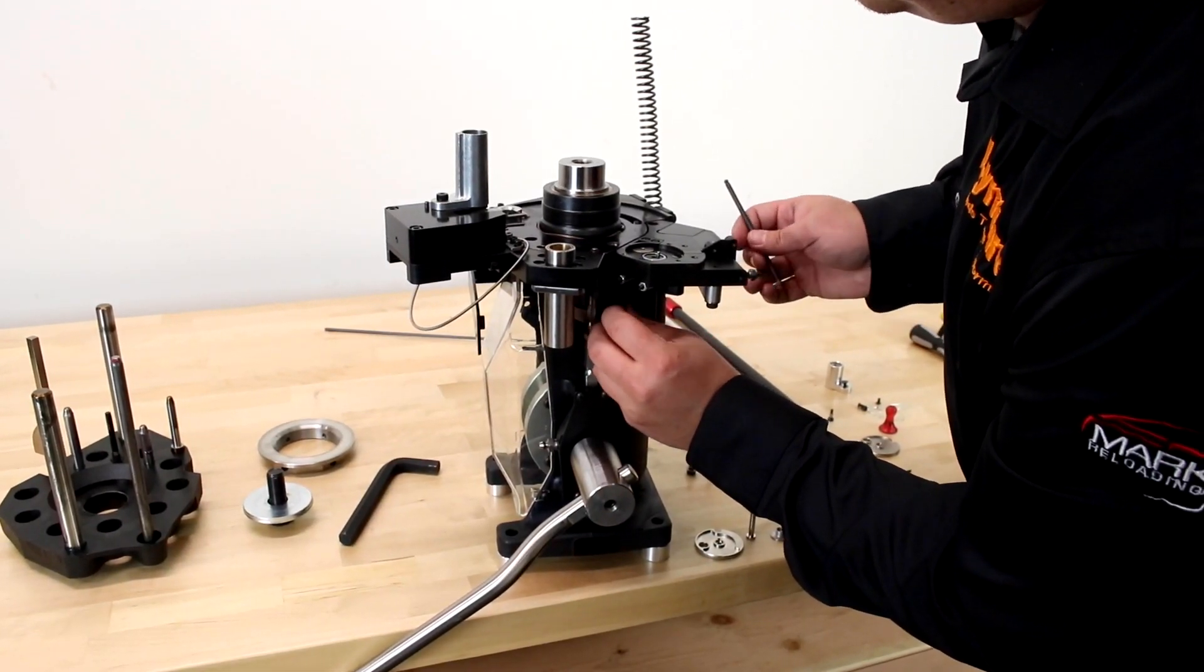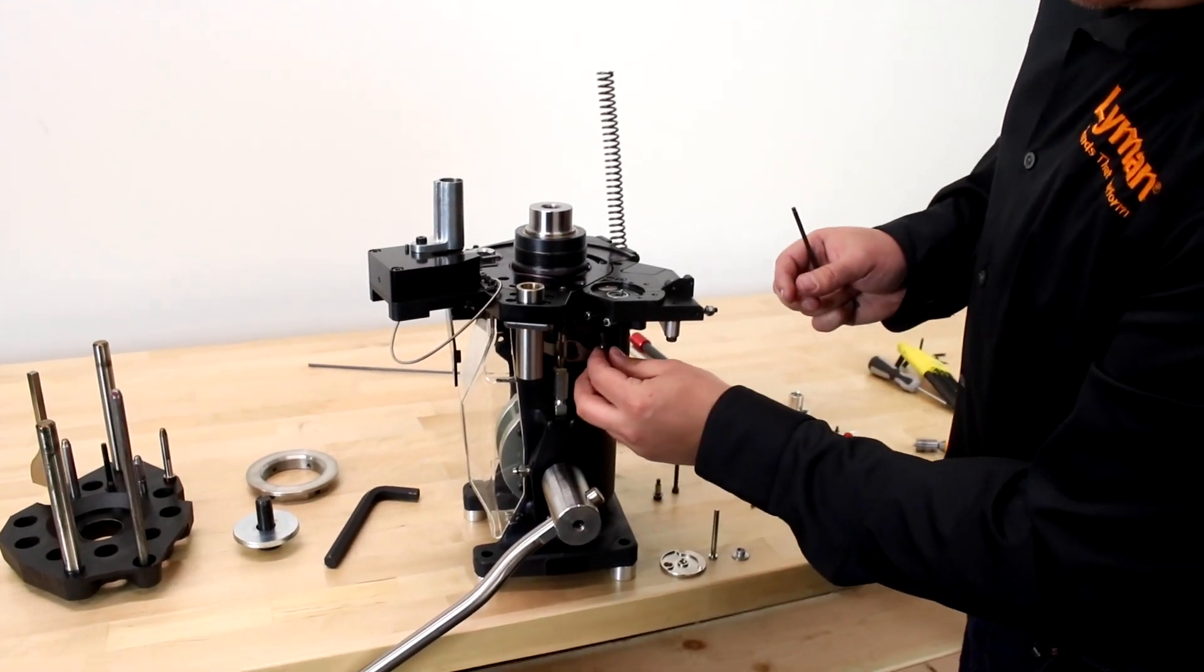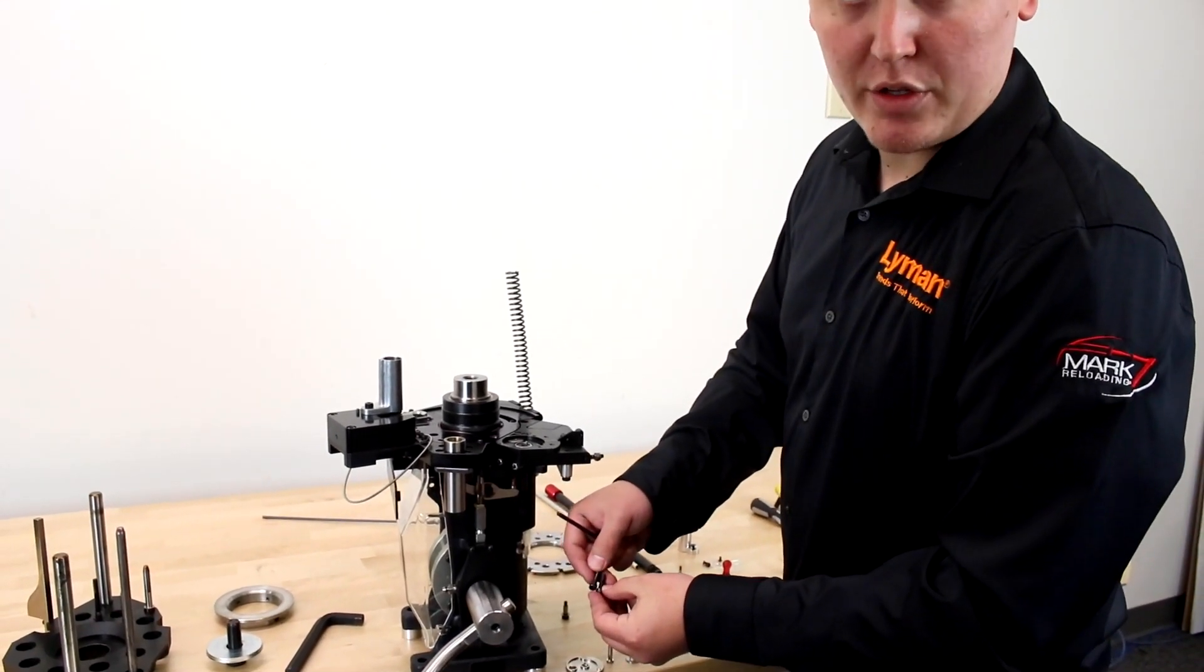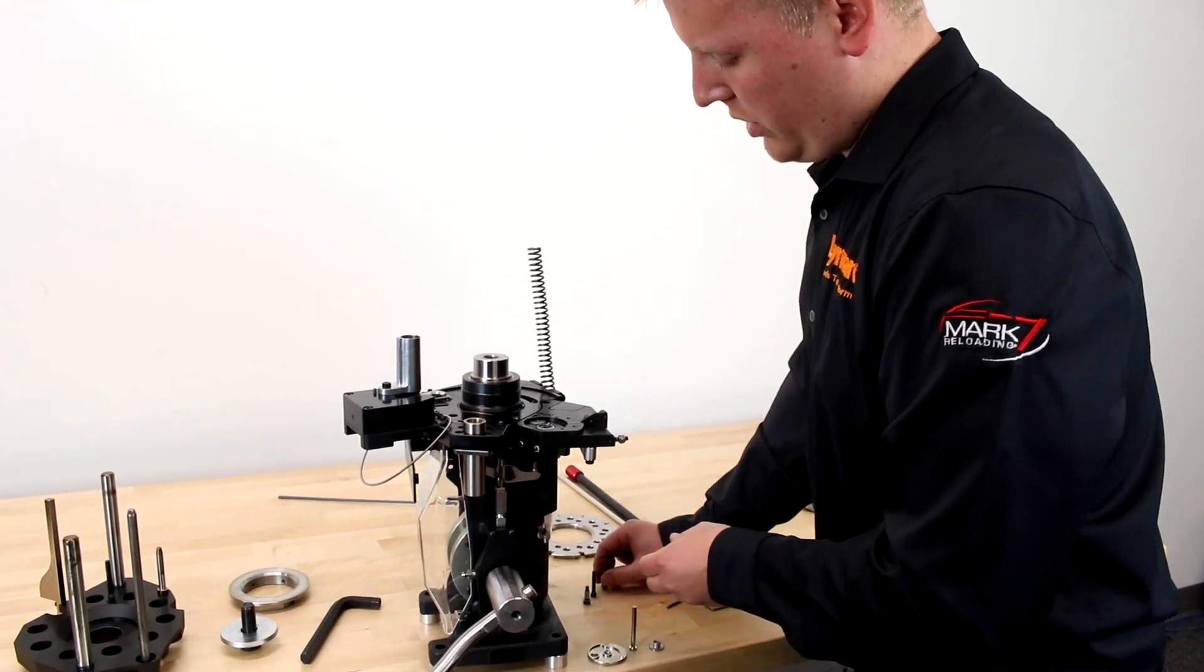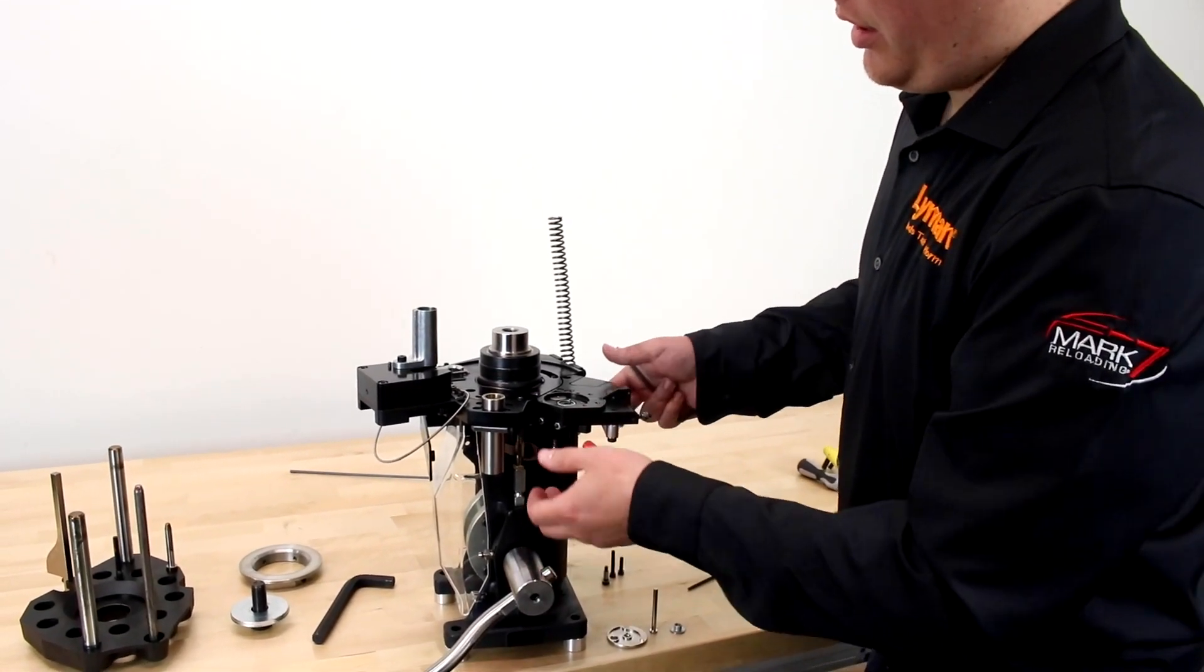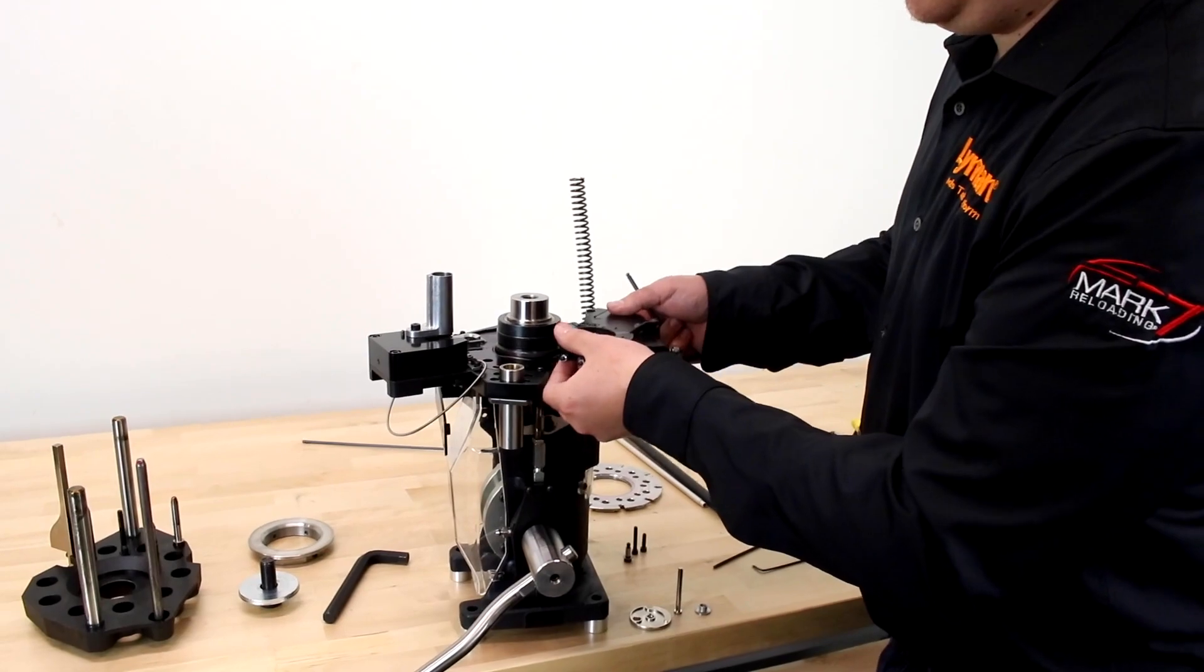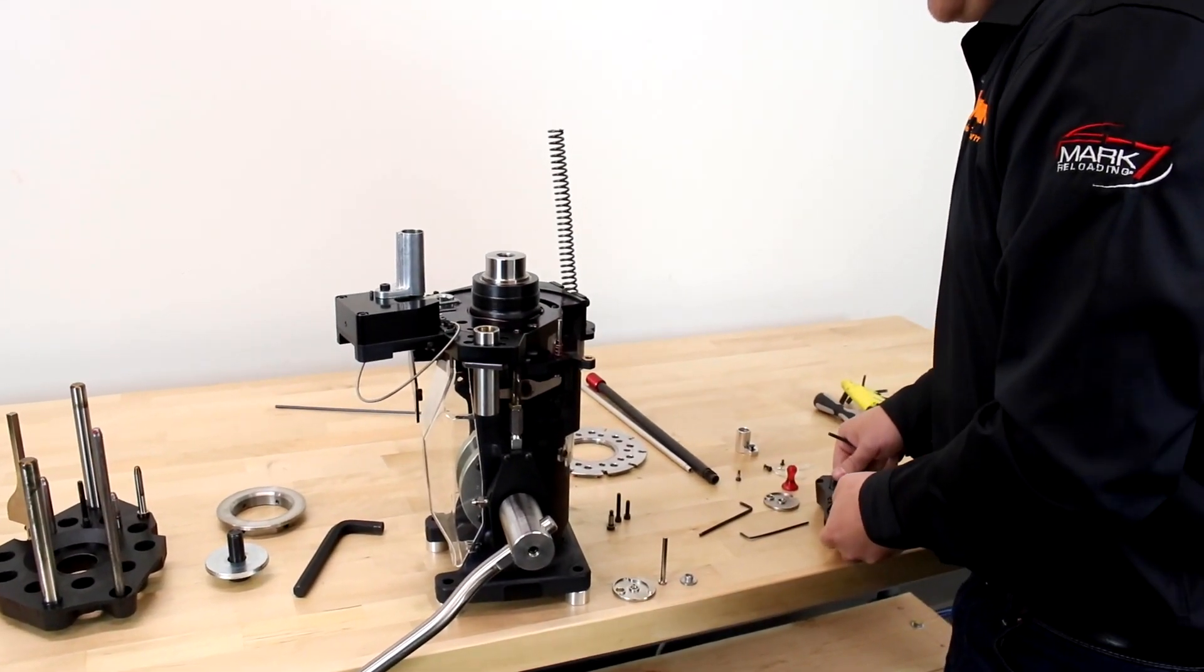One thing to note: the bottom bolt here is shorter than the longer bolt. Make sure they go back in that order or you can cause damage to the press. Next, all I'm going to do is simply lift up and set the primer aside.